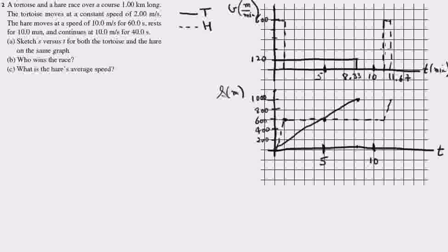This is problem 12 at the end of chapter 1. A tortoise and a hare race over a course of one kilometer long. That's a thousand meters.